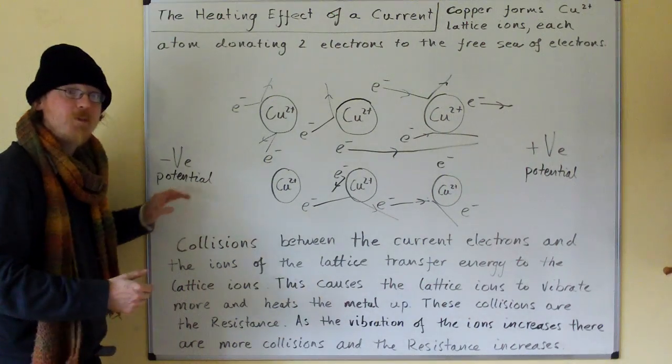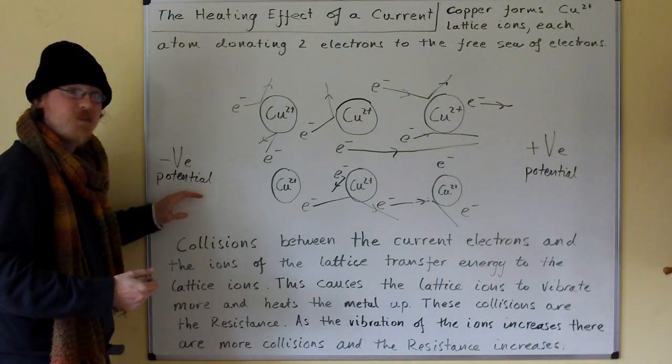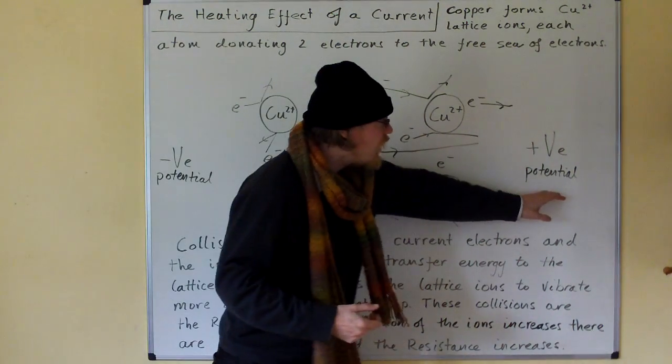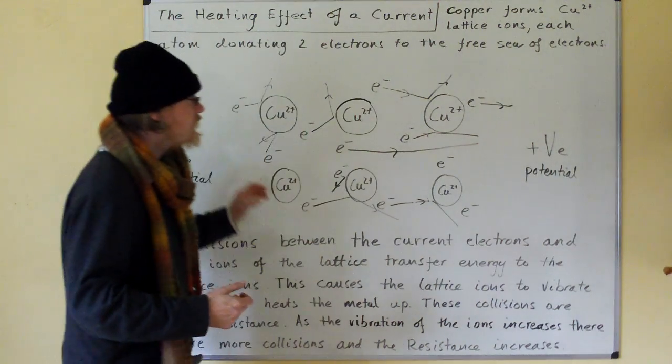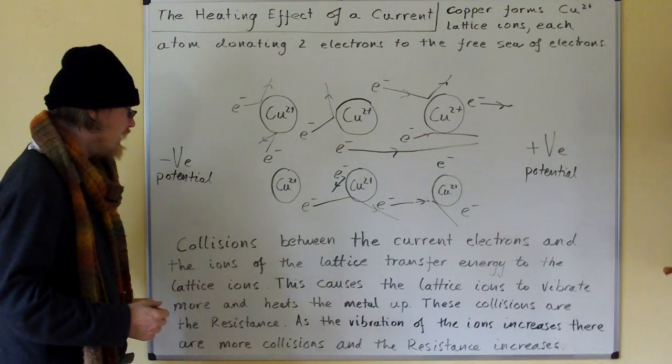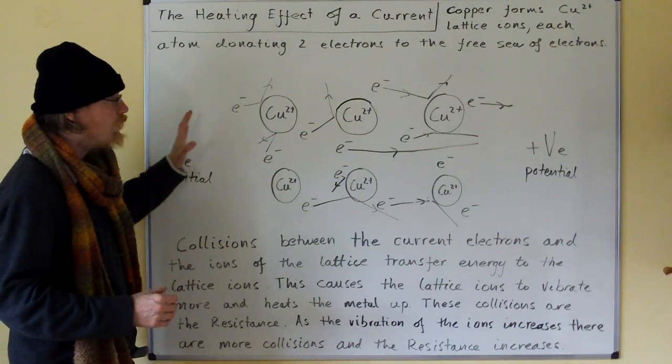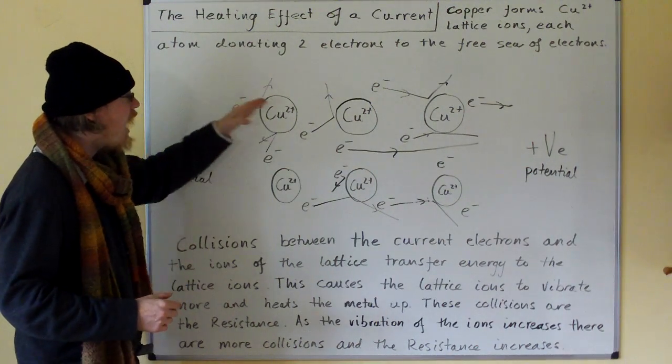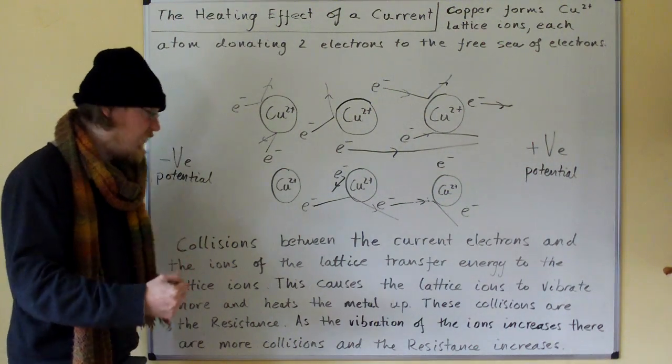The electrons will be repelled from the negative potential and attracted towards the positive potential. So the electrons will be pulled through the material. However, as they're pulled through the material, they collide with the lattice ions.